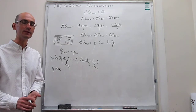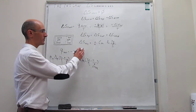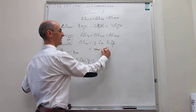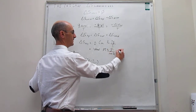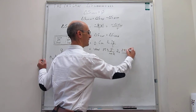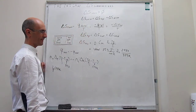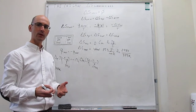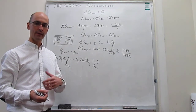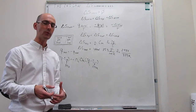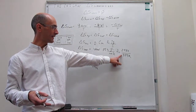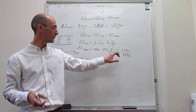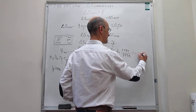Now that we have the final temperature, we can calculate the entropy changes. For the hot water: ΔS_hot = (1 mol)(75.3 J/mol·K) × ln(298/373). We expect a negative result since the water is cooling down, and indeed we are taking the natural log of a number less than one, which is negative. The result is −16.9 J/K — the hot water has lost entropy because it is becoming colder.